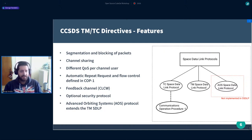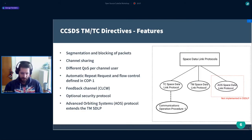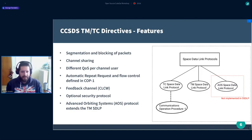The Advanced Orbiting Systems protocol is basically an extension of the telemetry part, providing some extra services. The difference is that the rest of the protocols are unidirectional — each end of the communication link must run a different protocol. Usually the ground station runs the telecommand space SDLP and the spacecraft runs the telemetry part. In the case of AOS, you can use it at both ends, making it bi-directional. We haven't implemented that part — we didn't have the time.